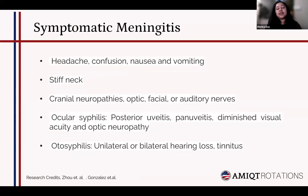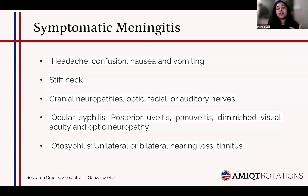Symptomatic meningitis manifests like normal meningitis: it causes headache, confusion, nausea, vomiting, and dizziness. It causes neck rigidity, so we can elicit Brudzinski's and Kernig's signs. It also involves cranial neuropathies affecting the optic nerve, facial nerve, and auditory nerve. A more significant finding is the prevalence of ocular syphilis and otosyphilis.